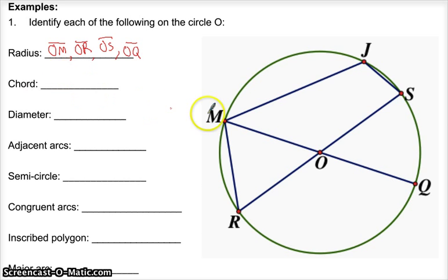Chord - you need a segment that has endpoints on the circle. So you could say MR, that's a chord. You could say MJ, you could say JS. You could actually say MQ. MQ is a little more special than a chord. Same with RS. Because RS and MQ are special chords that go through the center. We're going to call them diameters.